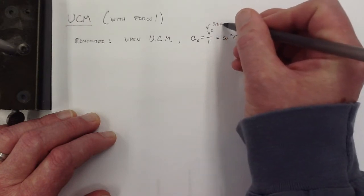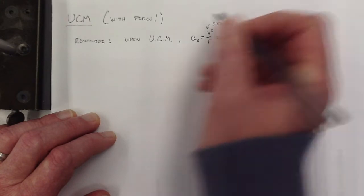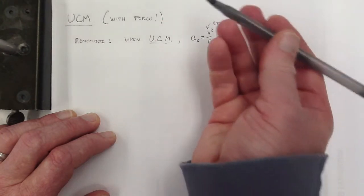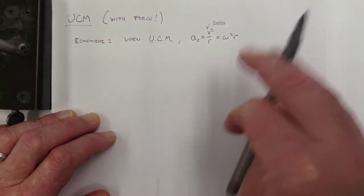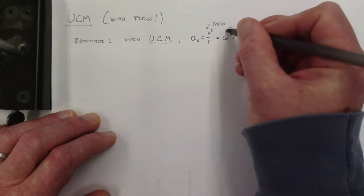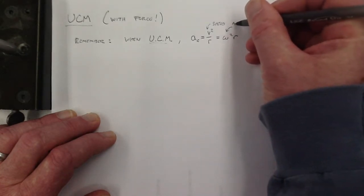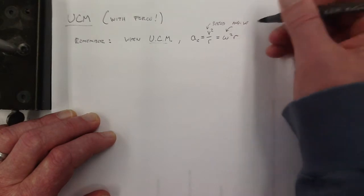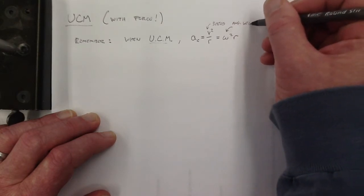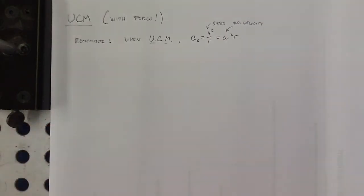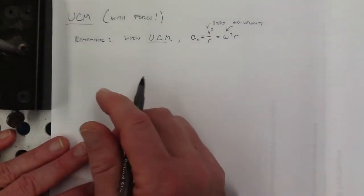Where this v here is the speed. Notice there's no vector hat on it. Of course, if you're in uniform circular motion, your speed's constant, but the direction of it is constantly changing. And this omega is your angular velocity, measured in radians per second. Okay, so that's a thing, and we did problems with that back then.